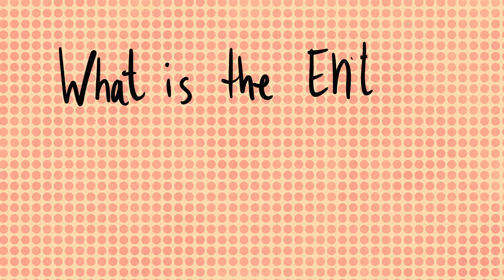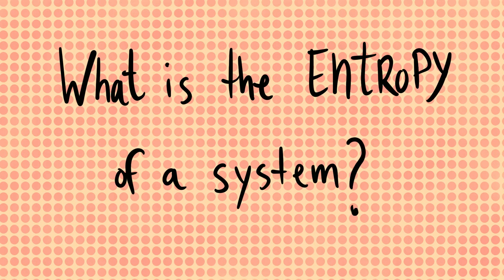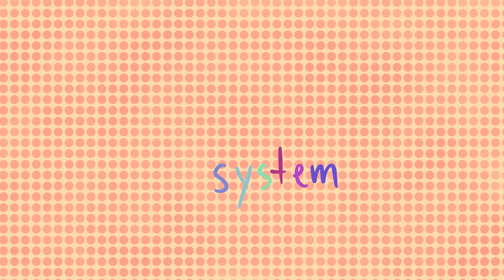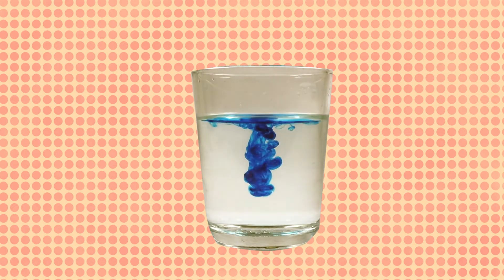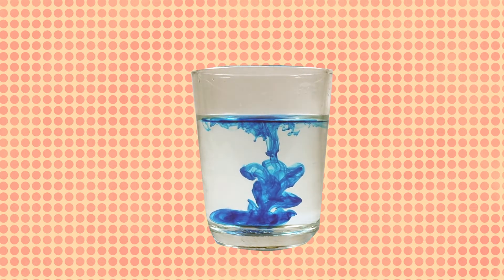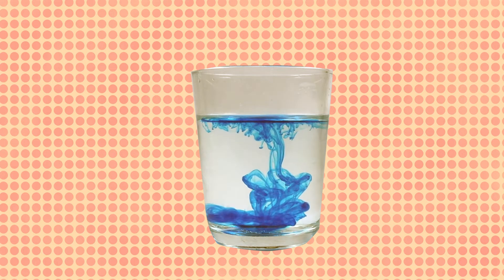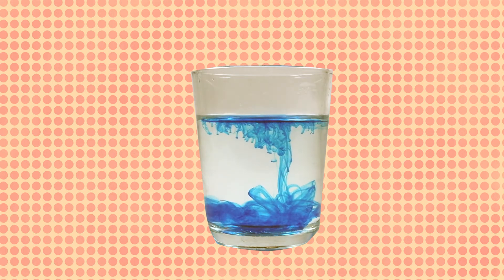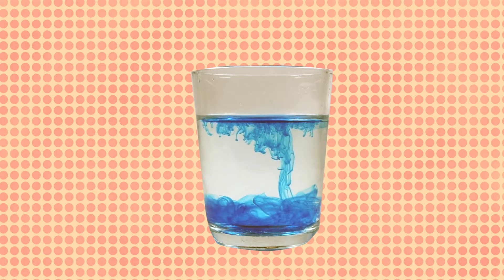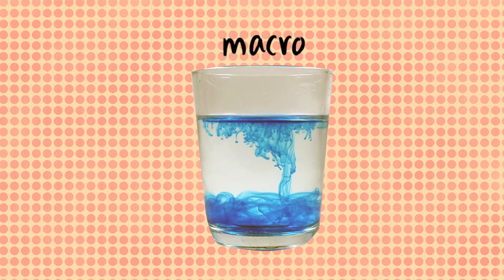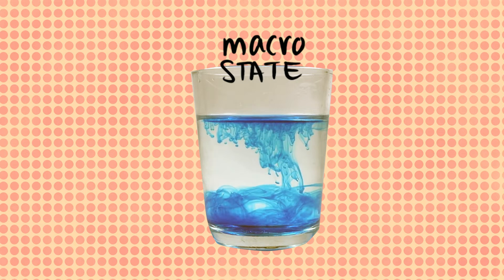But what exactly is the entropy of a system? Well, systems are made of many small parts. Entropy measures in how many ways you can arrange the parts so that the whole system still has the same large-scale properties. This is a little abstract, so let's consider an example: ink mixing in water. Let's first look at its large-scale properties, or as physicists call it, its macroscopic state.